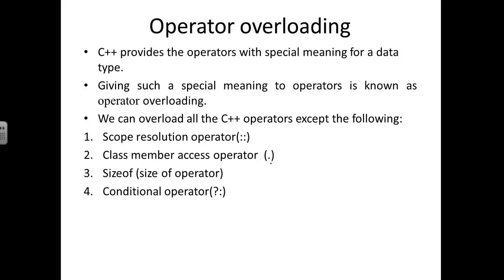The last operator is the conditional operator. This conditional operator cannot be overloaded — it can be used only for conditional purposes. Other than that, we cannot use it. So these four operators are important: if asked which operators cannot be overloaded in C++, you need to answer with these four operators.